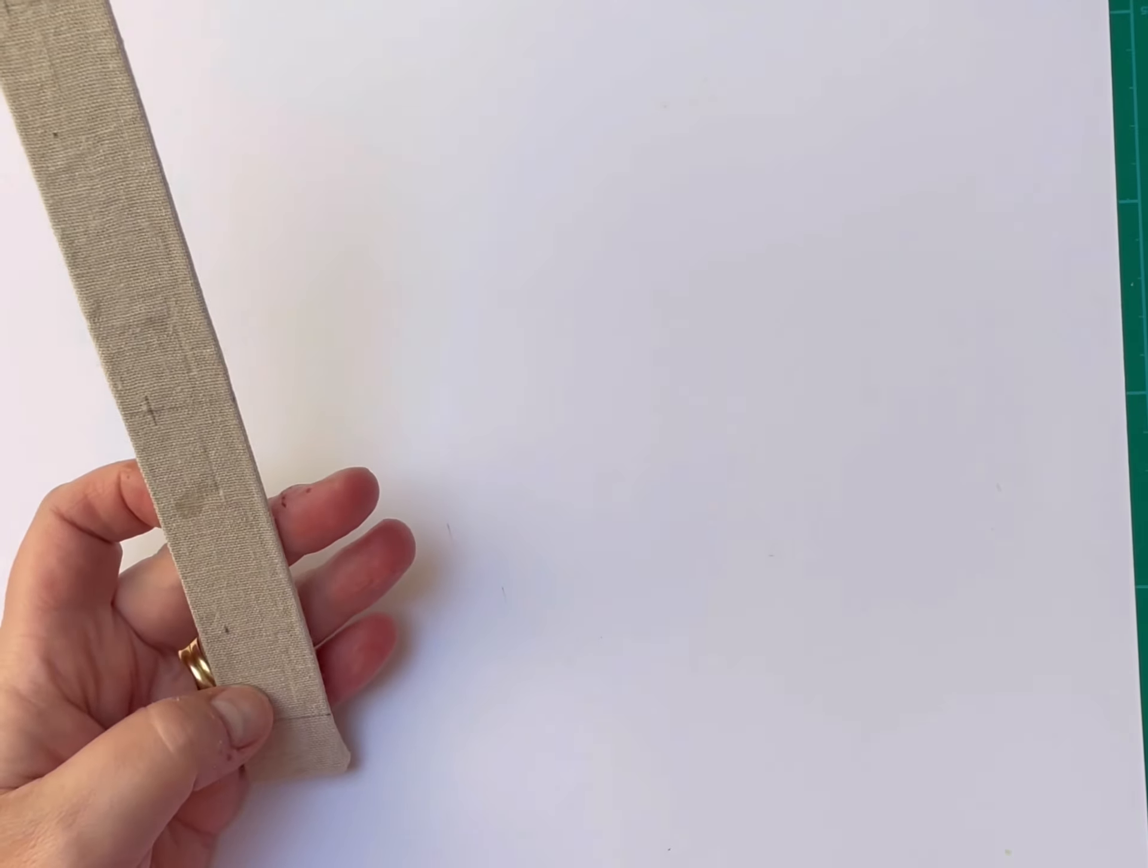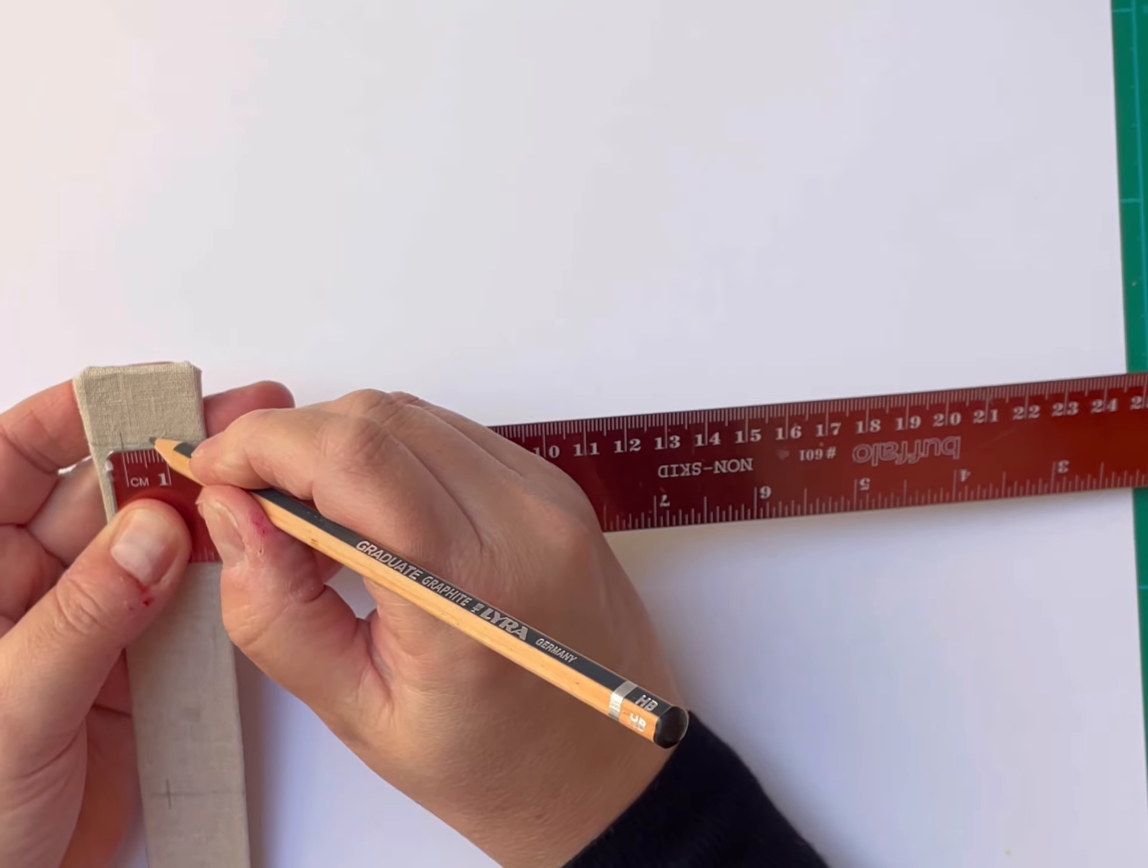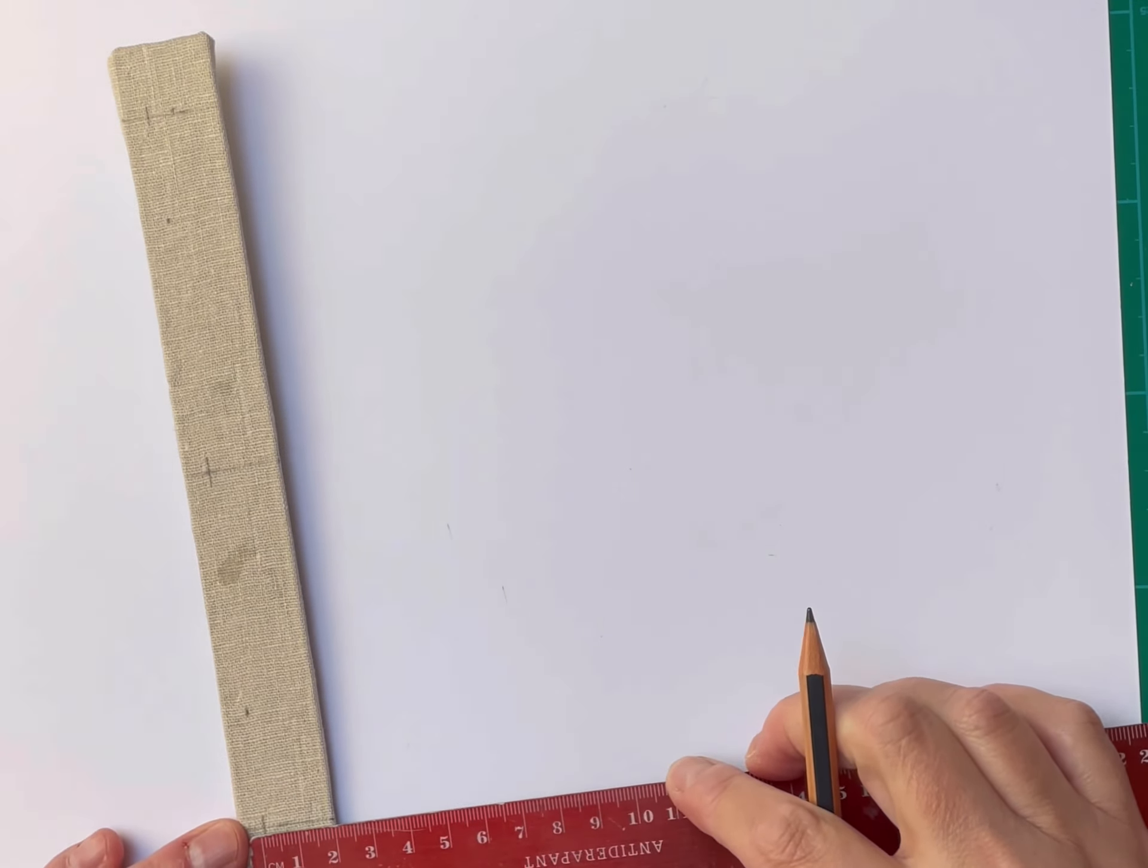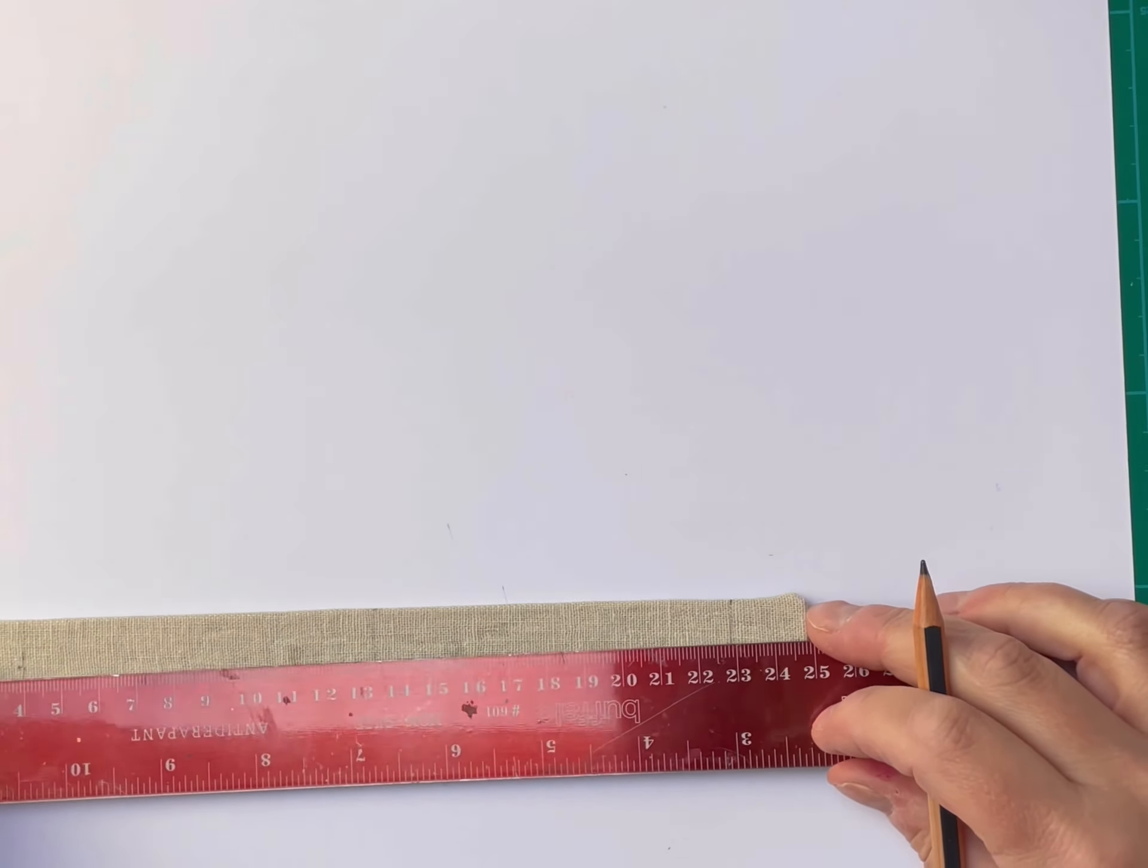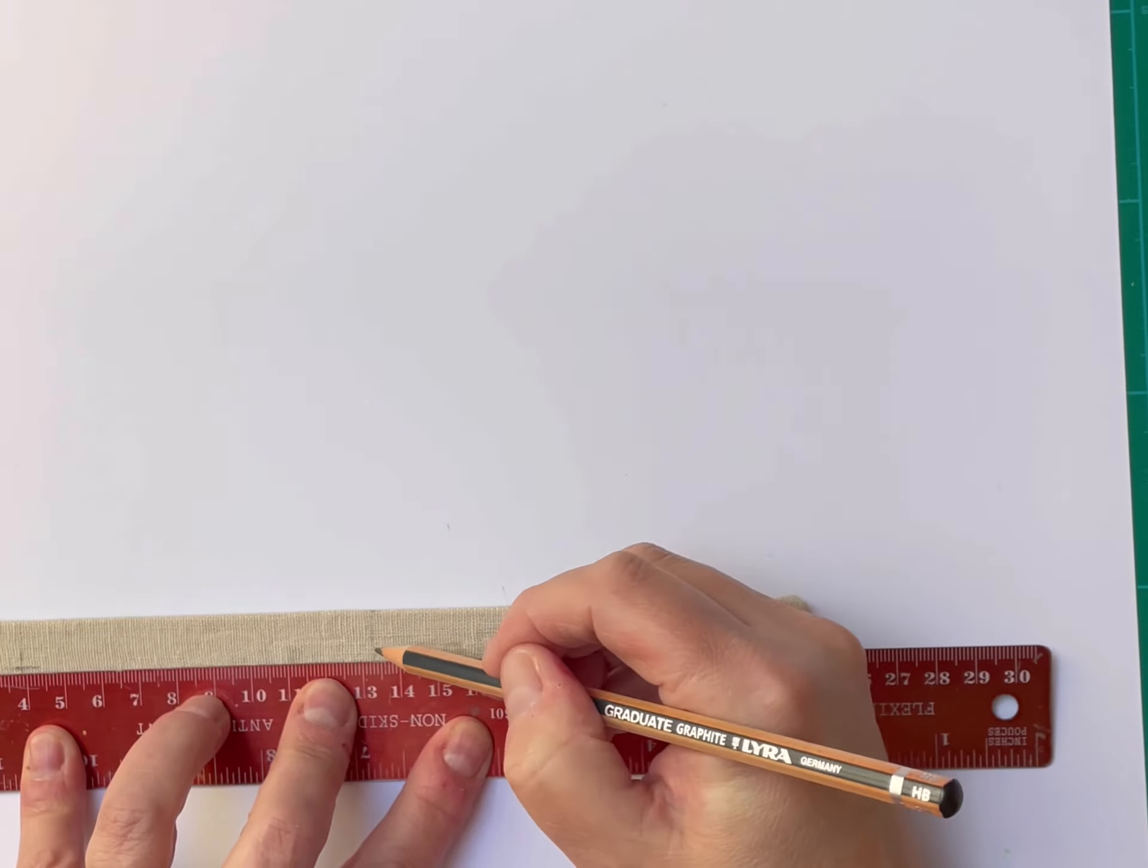I'm just going to mark it along the lines. Okay, so there's my three. So now I'm going to go six again for the second signature. I just need to do a top and bottom to make sure I don't run off the straight.